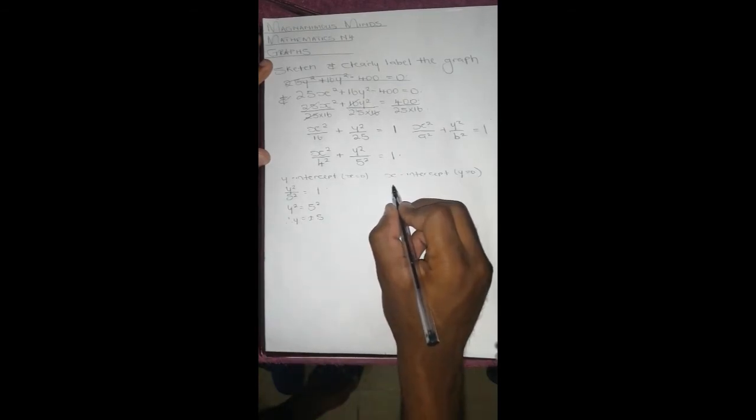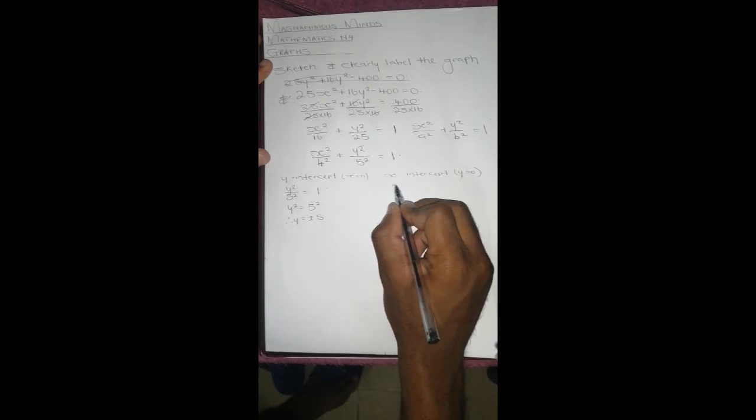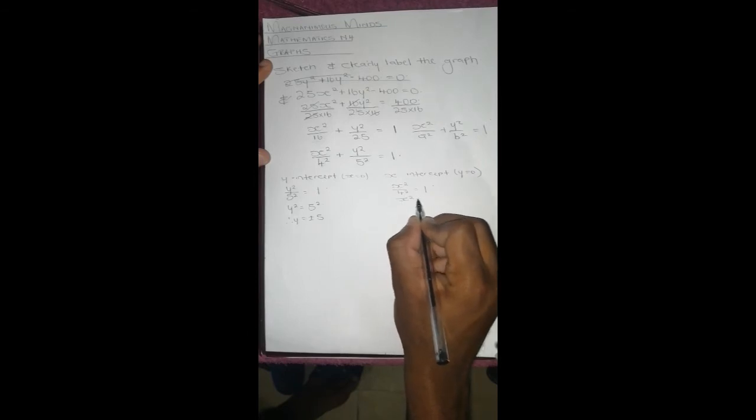If we put x as 0 here, this is going to be 0, so we're going to be left with y²/5² = 1, and y² is going to be 5². Therefore y = ±5. This side we're going to be left with x²/4² = 1, x² = 4², and x = ±4.